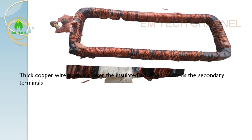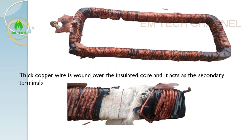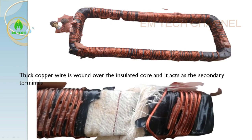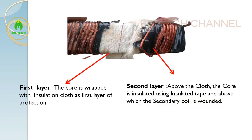Inside the outermost shell, there will be a core, and on that core an insulation cloth is wrapped around it, followed by insulation tape. Above that, multi-turn thick copper wire is wound, and that acts as the secondary winding. So the first layer is the core wrapped with insulation cloth, the second layer is insulation tape, and above that the copper wire is wound.